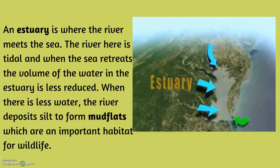An estuary is where the river meets the sea. The river here is tidal and when the sea retreats, the volume of the water in the estuary is reduced. When there's less water, the river deposits silt to form mudflats, which are an important habitat for wildlife.